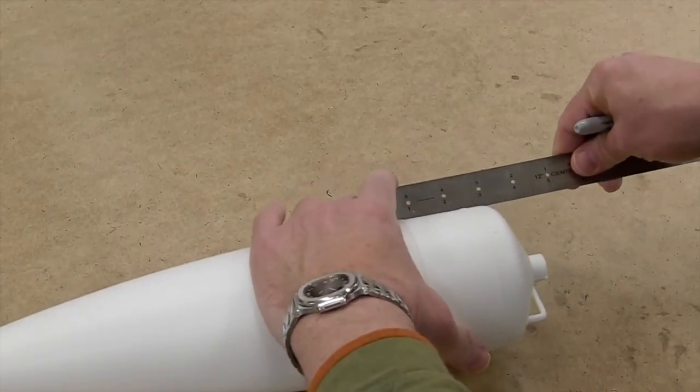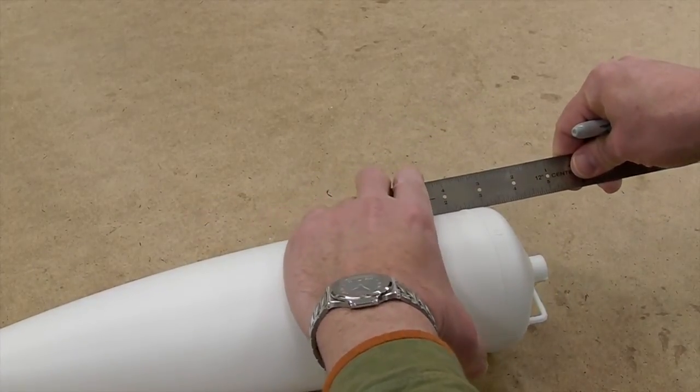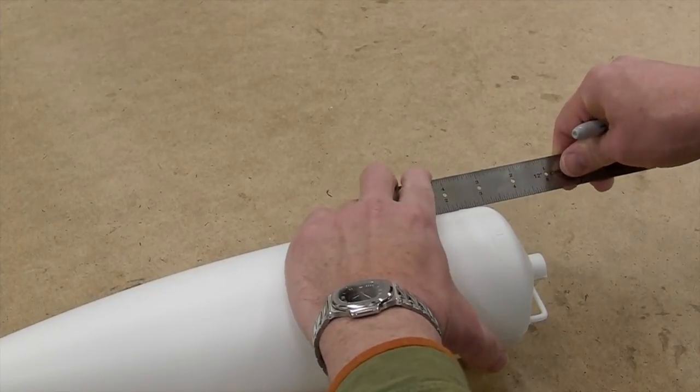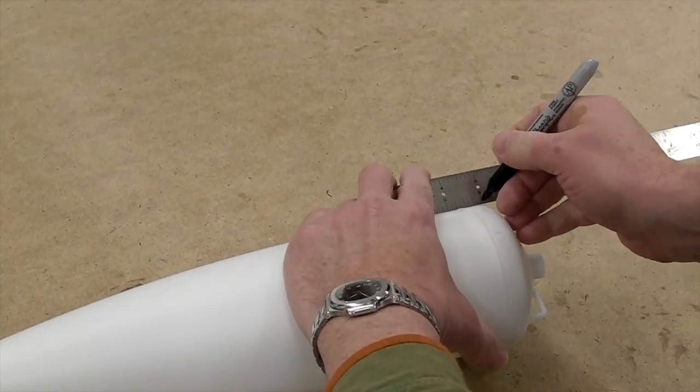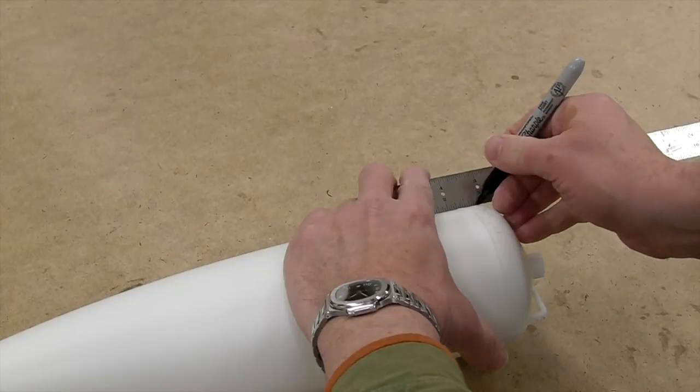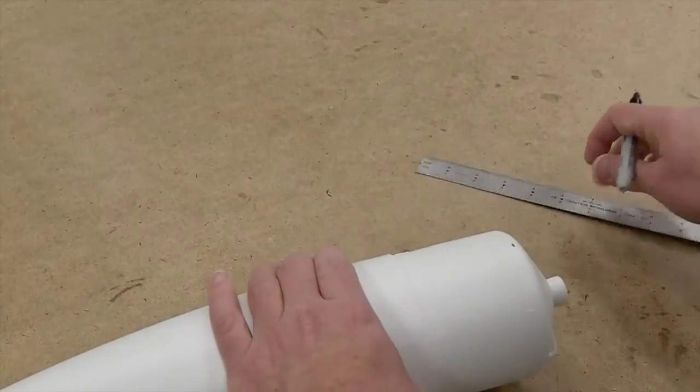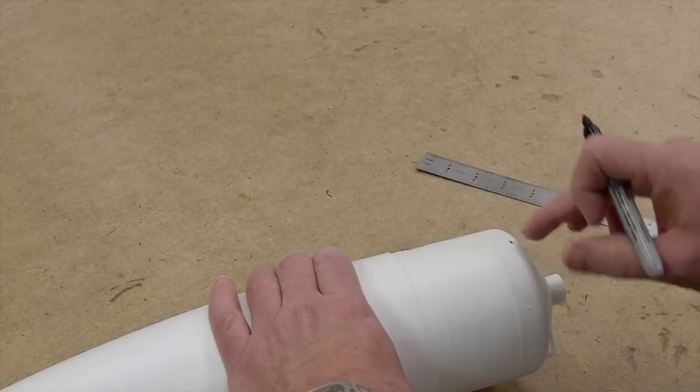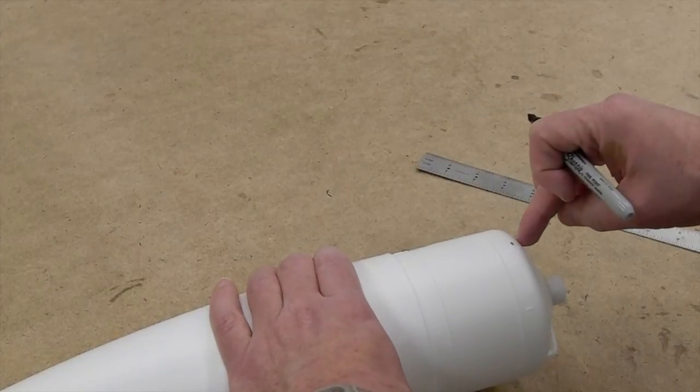Now you'll notice that it actually rounds off, so we basically want to cut it at the edge where it starts to round off. We don't care about any of this, but we want to keep as much of the flat shoulder as possible.